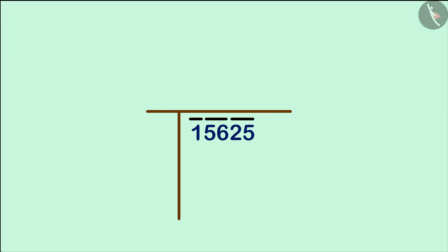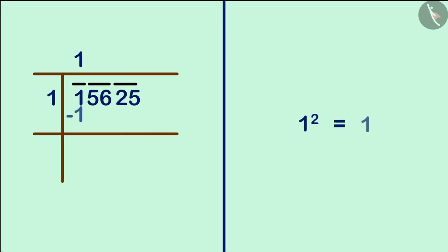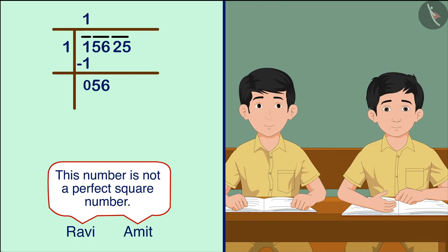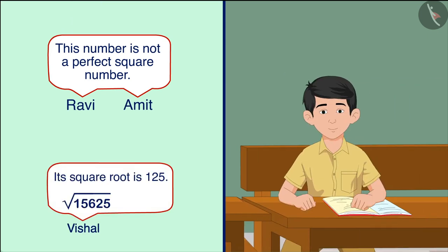If the number below the first bar is one, we will take the first number because the square of one is the same and is equal to the number below the bar. Now we will write the number 56 below. After this, Ravi and Amit came to the conclusion that this number is not a perfect square number, but Vishal got its square root as 125.